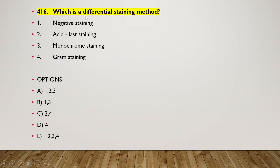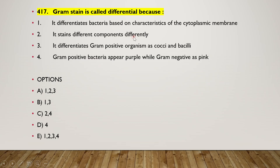Next question: which is a differential staining method — (1) negative staining, (2) acid fast staining, (3) monochrome staining, (4) Gram staining. The right answer is option C — two and four is the correct answer.